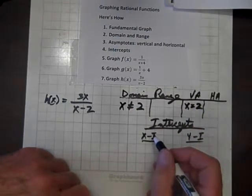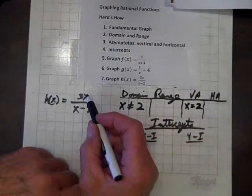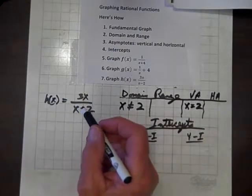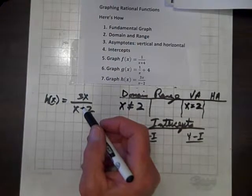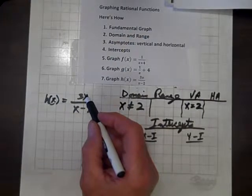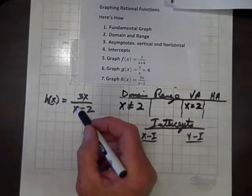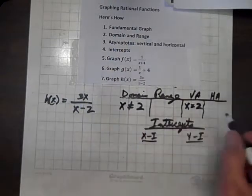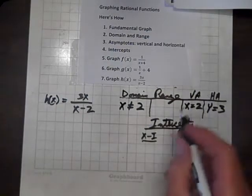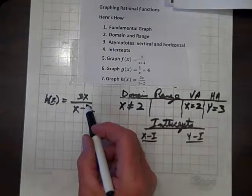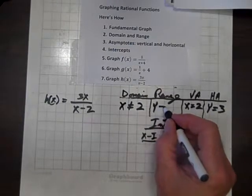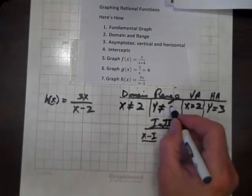Now, the range is, since our numerator and denominator are both of the same degree, our horizontal asymptote is going to be the quotient of the coefficients on x, the degree-setting terms, and so that horizontal asymptote is going to be y equals 3. And as it turns out, that also corresponds to the range of this function such that y cannot equal 3.